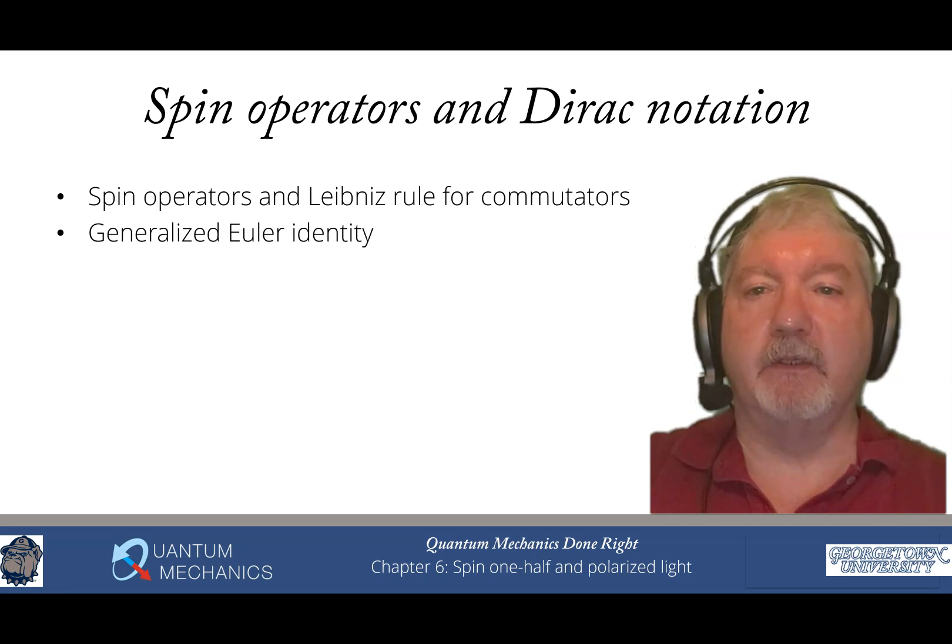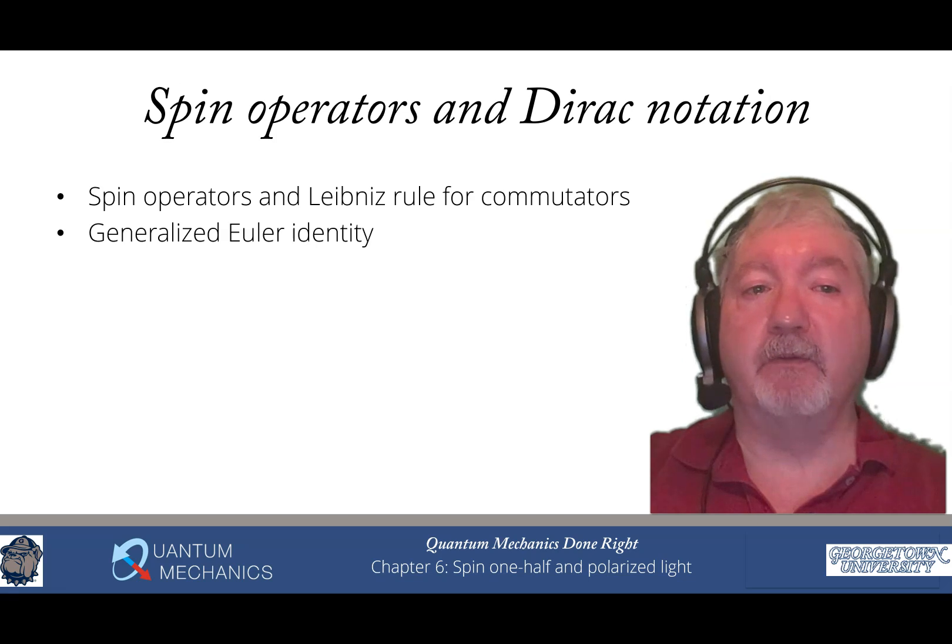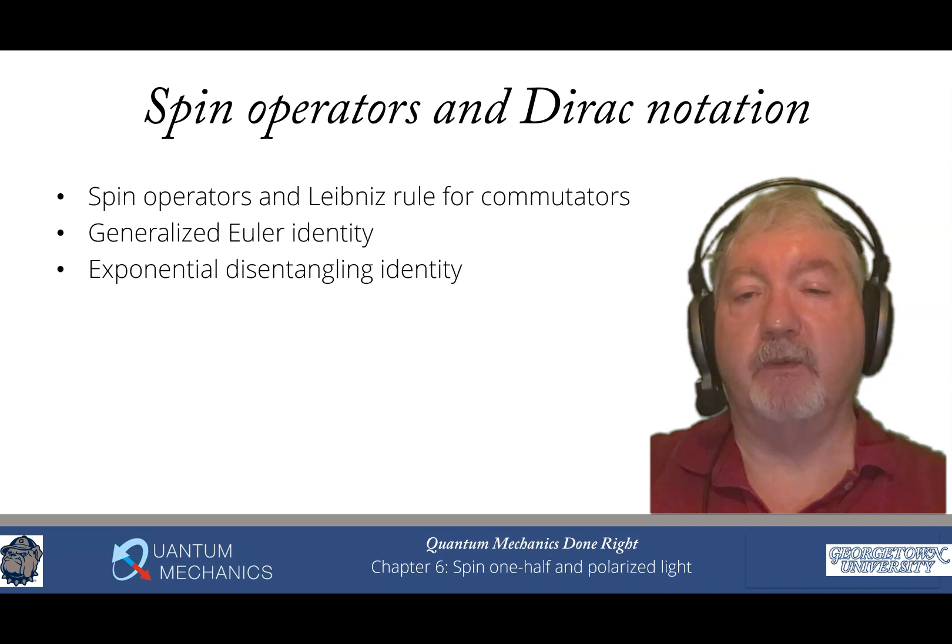And from that, we can derive the generalized Euler identity using the exponential power series that we derived in the previous chapter. We also can derive the exponential disentangling identity. This is something that most people are not familiar with, but it is derived in a very easy way simply by multiplying two by two matrices together. And we show you all the details for how that works.